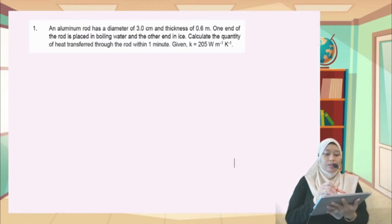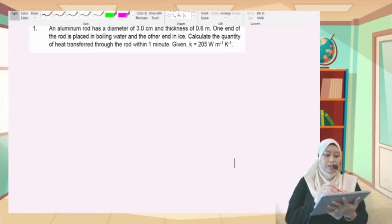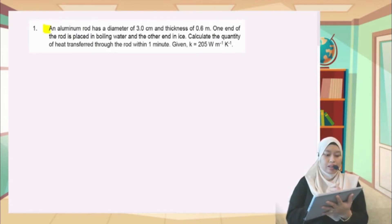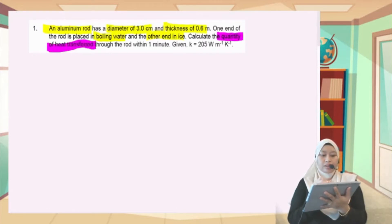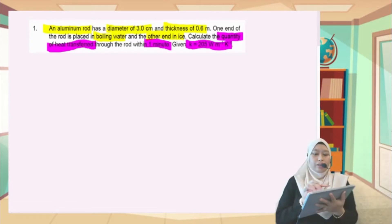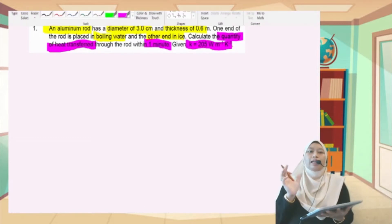So as usual, let's list all the information given in this question. We have an aluminum rod with diameter, thickness, one end in boiling water, the other end in ice. The question asks for quantity of heat transfer in one minute and it gives us K. So we have highlighted all the information given.